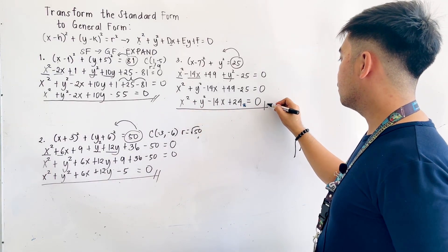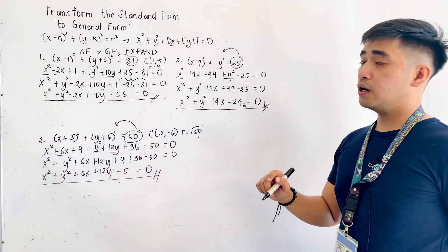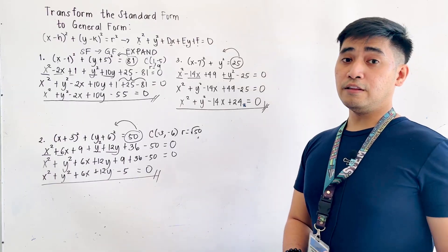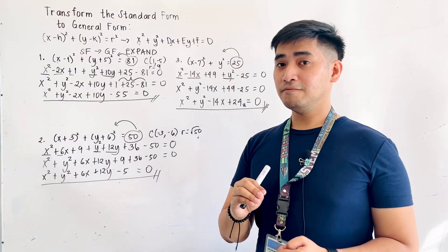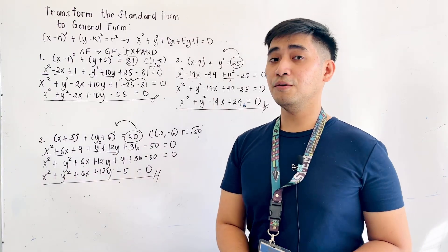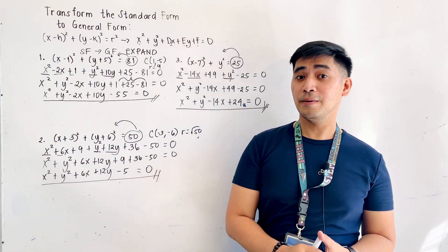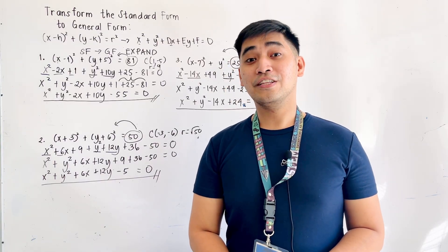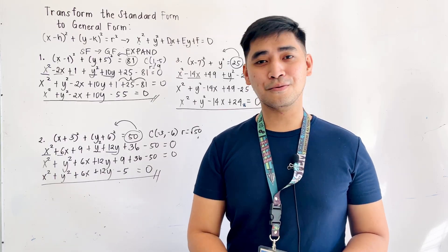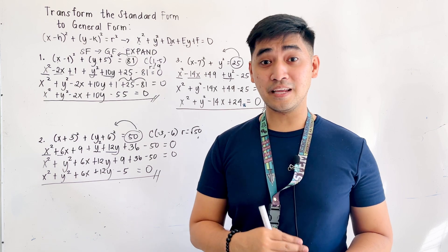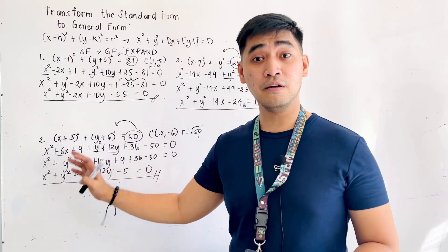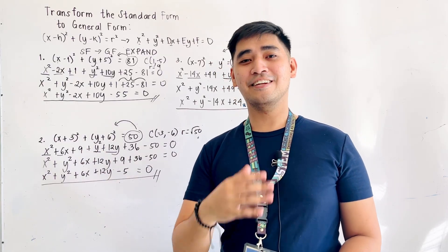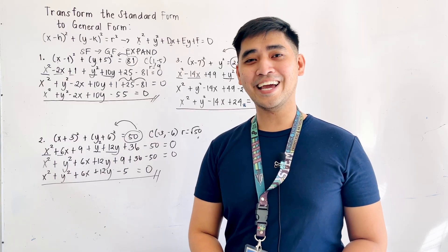The general form of (x minus 7) squared plus y squared equals twenty-five is x squared plus y squared minus 14x plus 24 equals zero. Remember: to transform standard form to general form, the standard form is (x minus h) squared plus (y minus k) squared equals r squared, and the general form is x squared plus y squared plus dx plus ey plus f equals zero. I hope you learned something today. I am Engineer Jod Edward Hernandez saying that mathematics is always fun. Goodbye and God bless.